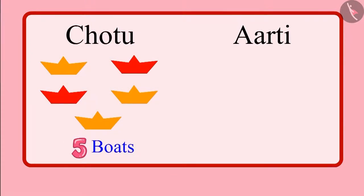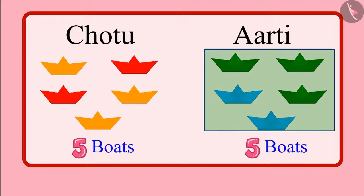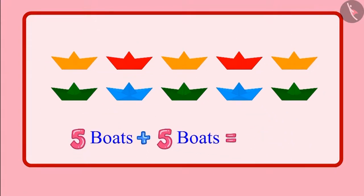And Aarti made 1, 2, 3, 4, 5 — that means 5 boats. So children, can you tell me how many boats did Chotu and Aarti make together? Yes, Chotu and Aarti have together made 10 boats.